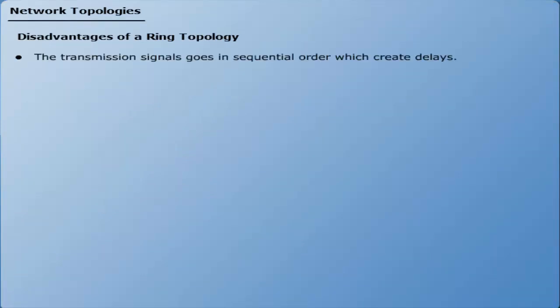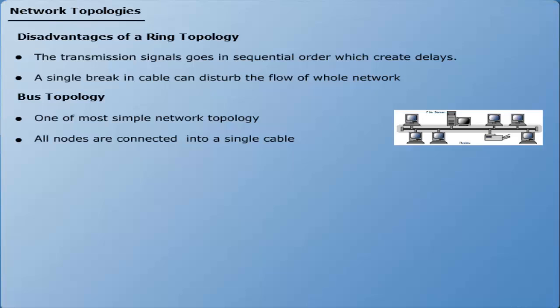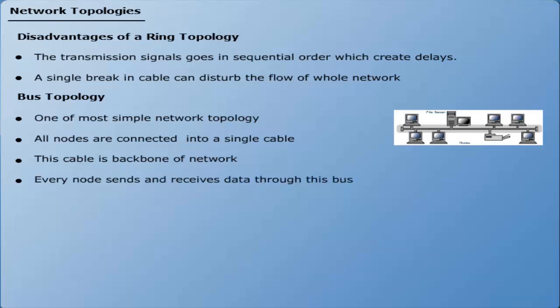Disadvantages of ring topology: transmission signals go in sequential order which creates delays, and a single break in the cable can disturb the flow of the whole network. Bus topology is one of the most simple network topologies. In bus topology, all nodes are connected into a single cable. This cable is the backbone of the network and is known as the bus. Every node sends and receives data through this bus.